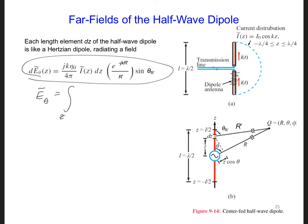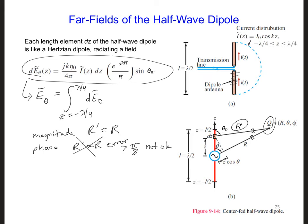Then the entire half wave dipole radiates into the far field with this expression where we integrate z equals minus lambda over 4 to lambda over 4. When we perform this integration, there are a few differences here compared to a short dipole. For the magnitude, we can approximate r prime, which goes from the infinitesimally short segment to our observation point, we can say r prime is about equal to r. But for the phase, we cannot say r prime is about equal to r. That's too crude of an approximation because as a rule of thumb, the phase error greater than pi over 8 is not okay, it's unacceptable.